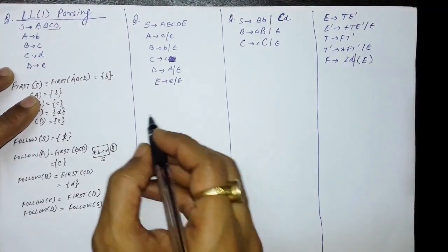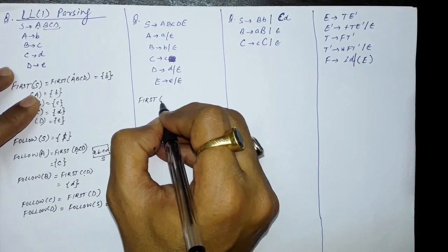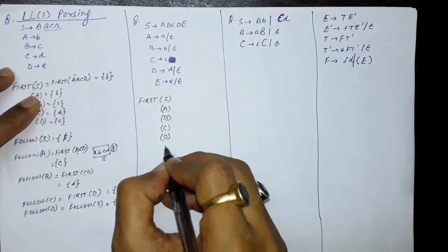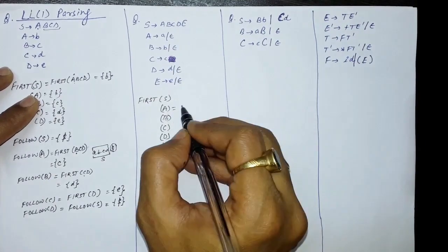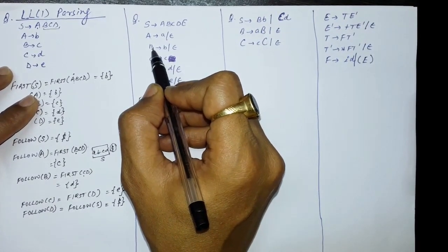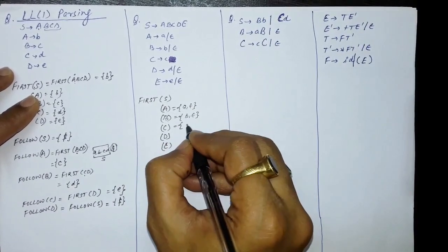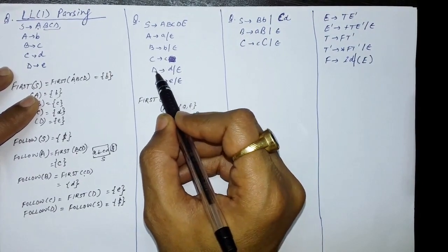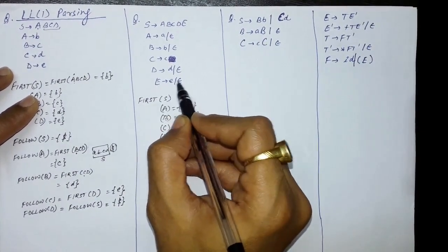Now let us take another example. We have to find the FIRST and FOLLOW for all symbols. First, compute the easier FIRSTs: FIRST of A is small a and epsilon; FIRST of B is small b and epsilon; FIRST of C is small c; FIRST of D is small d and epsilon; FIRST of E is small e and epsilon.